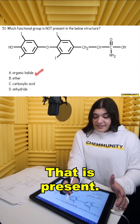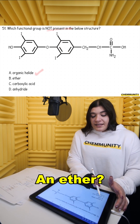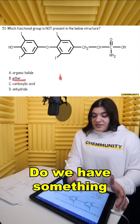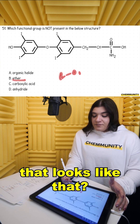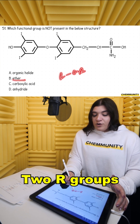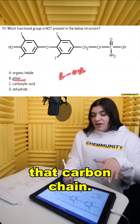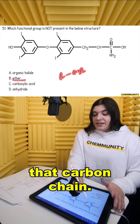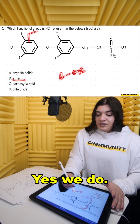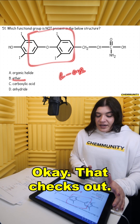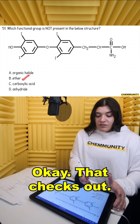An ether — do we have something that looks like that? Two R groups and an oxygen interrupting that carbon chain. Yes, we do. Okay, that checks out.